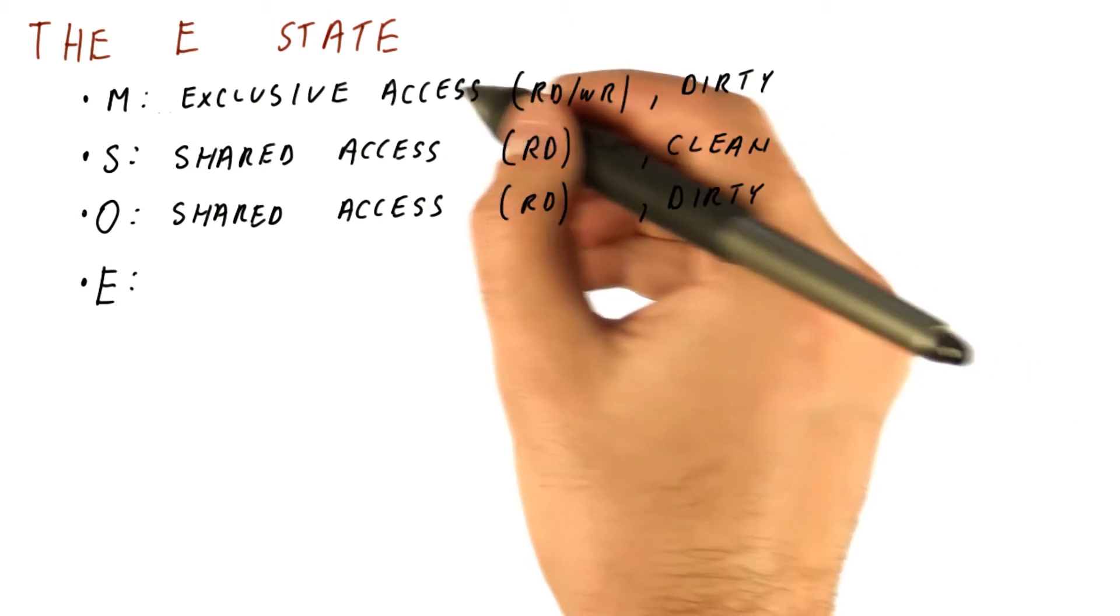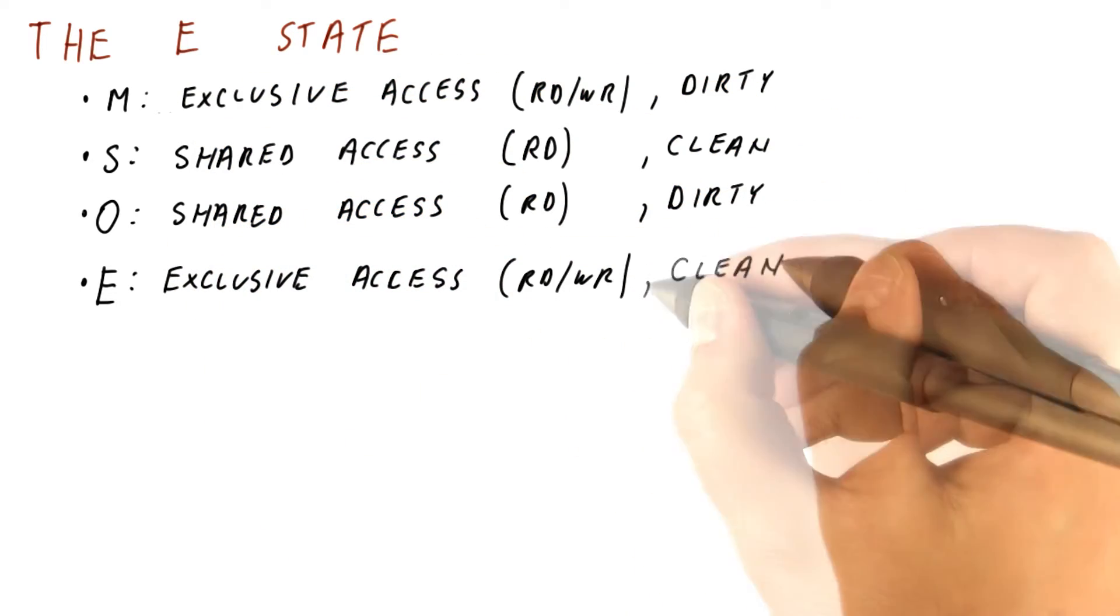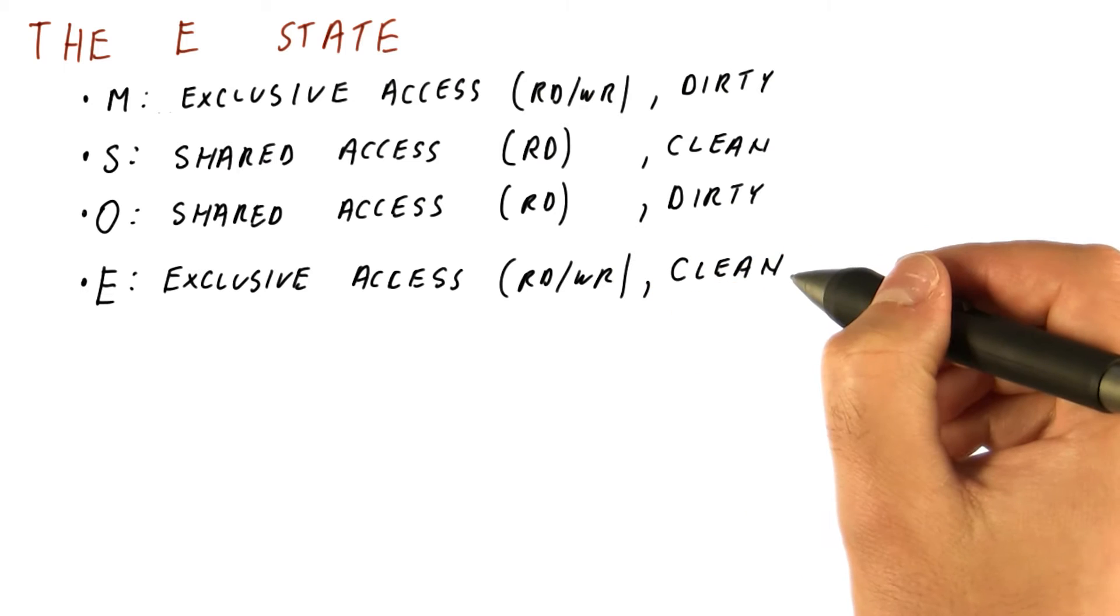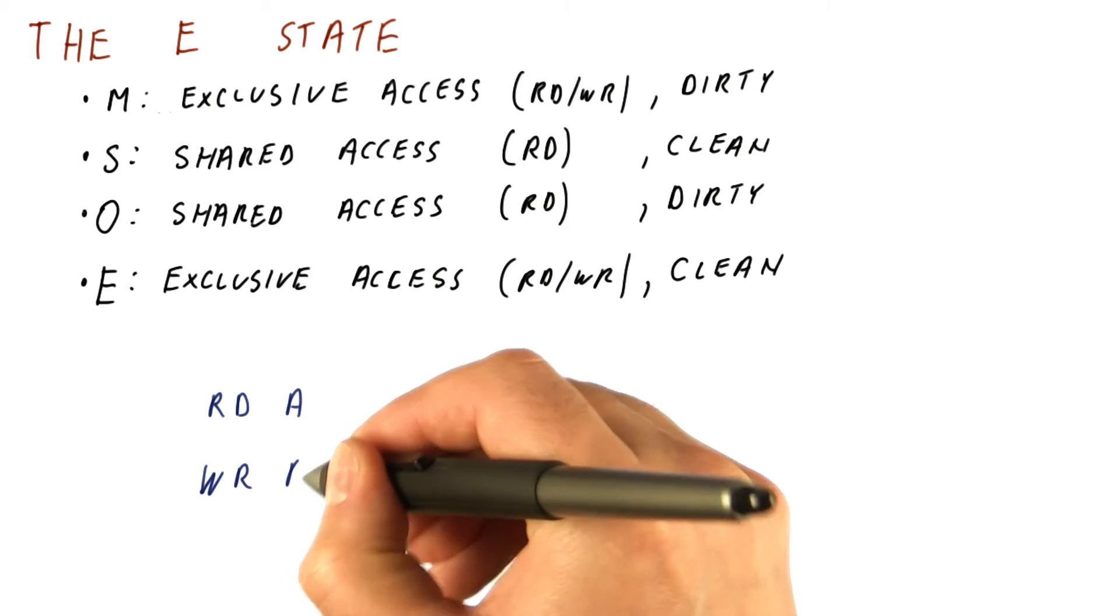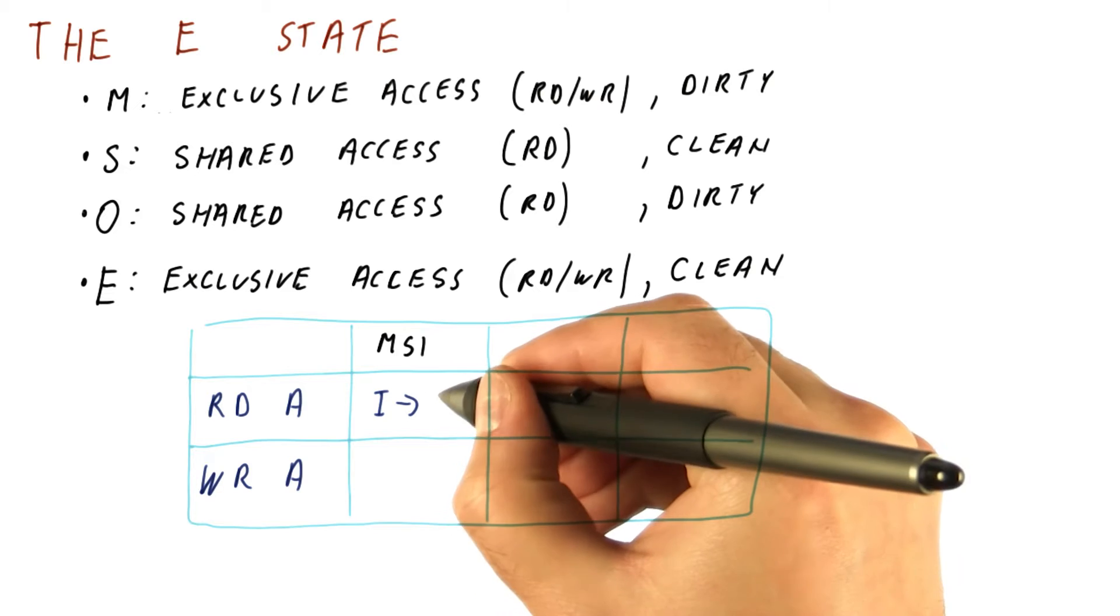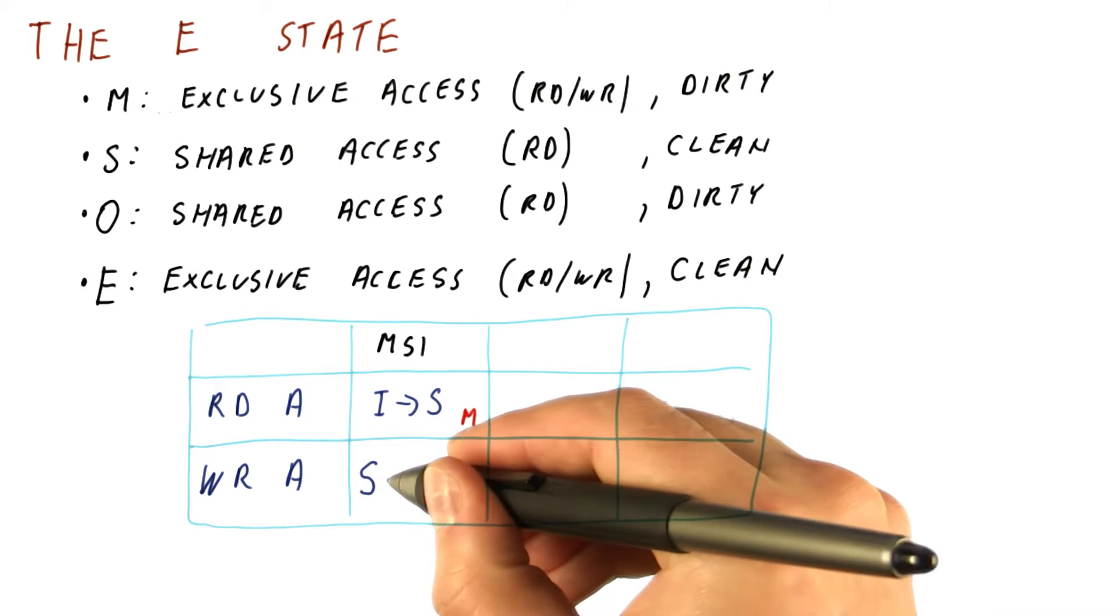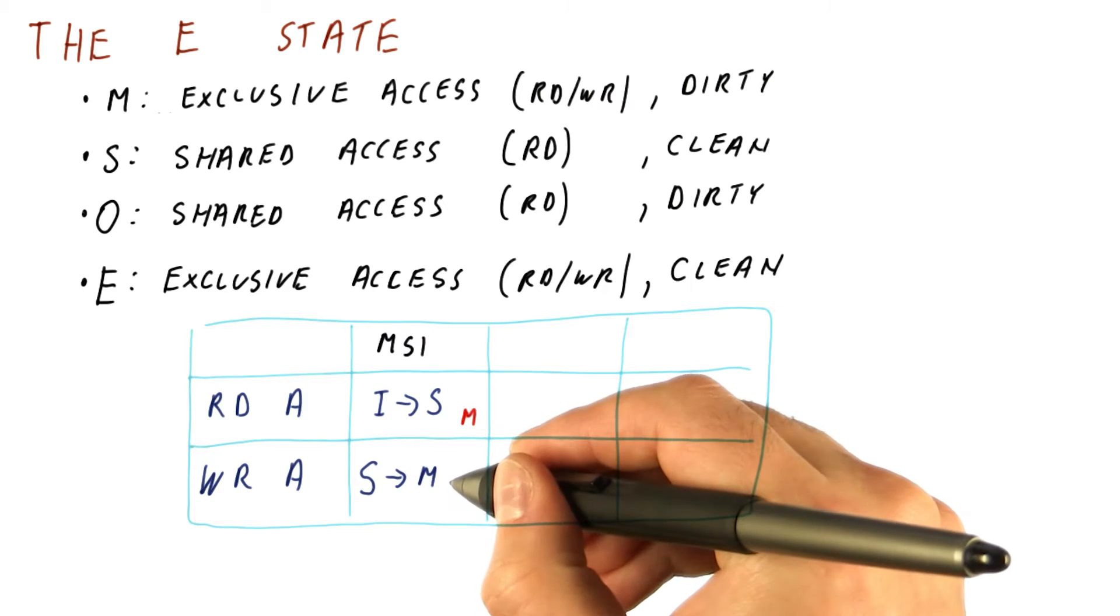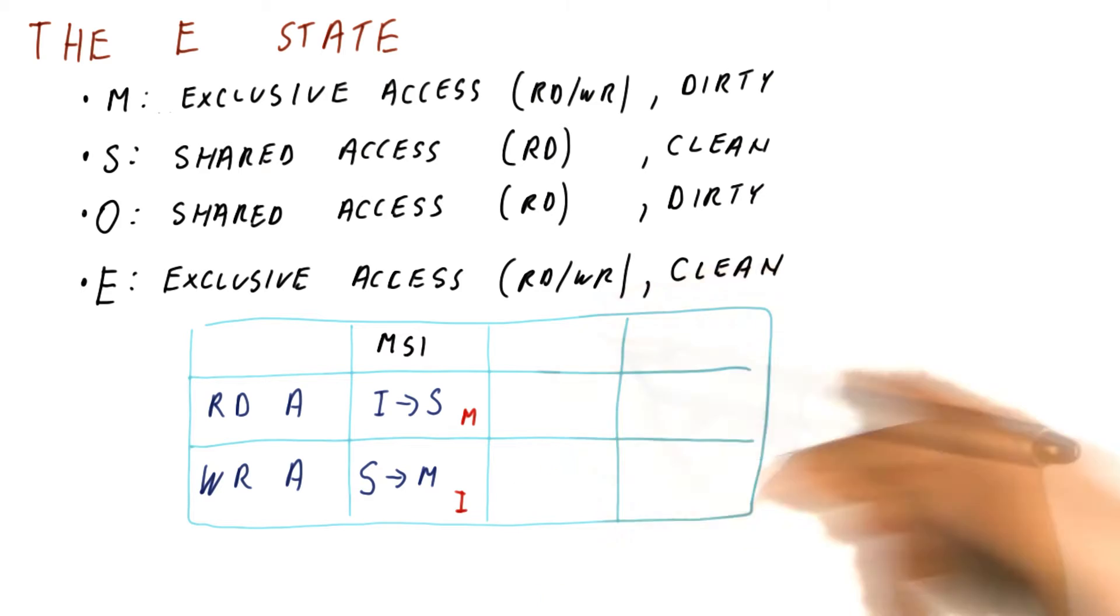What E does is it gives us exclusive so that we can read and write, although the block is still clean. The memory still doesn't need to be updated. So when a core does read A followed by write A, in the MSI protocol, we move from invalid to shared and suffer a miss. And then we move from shared to modified and need to send out an invalidation. So we had two bus accesses.